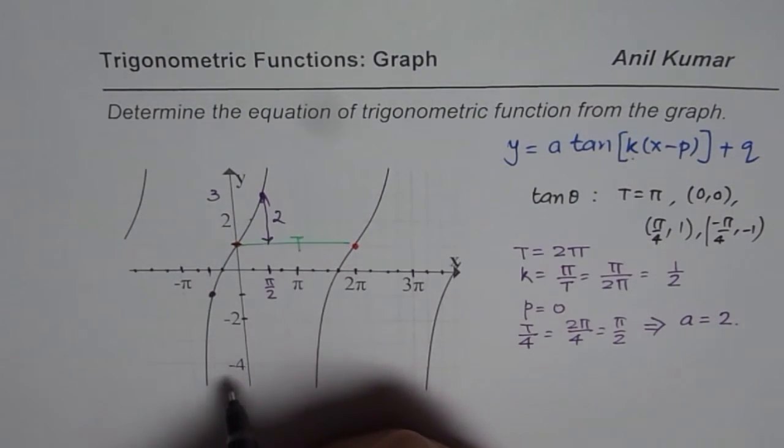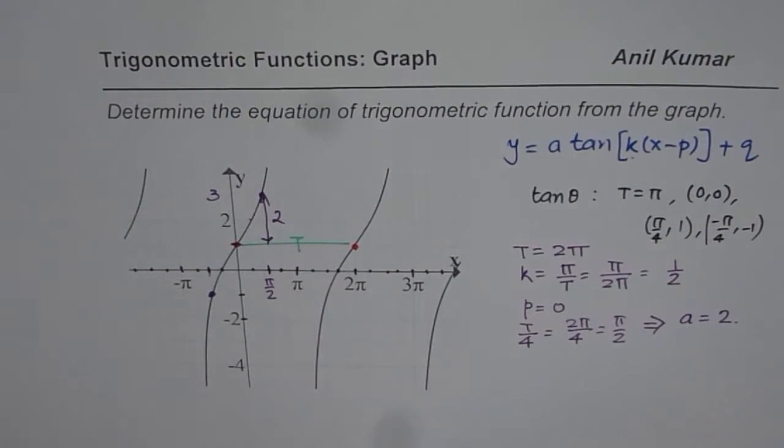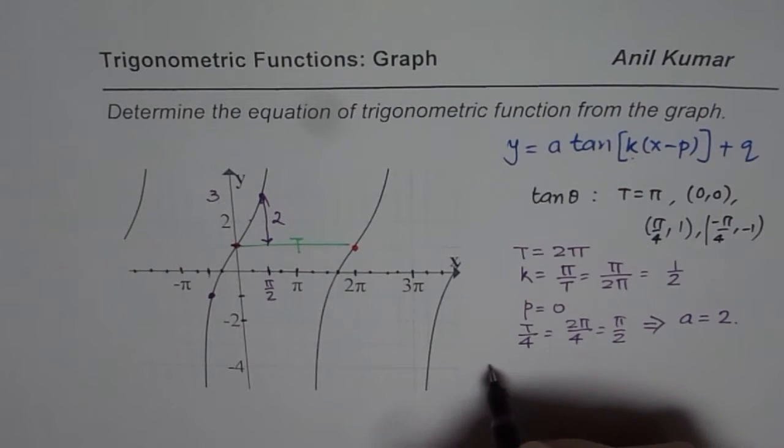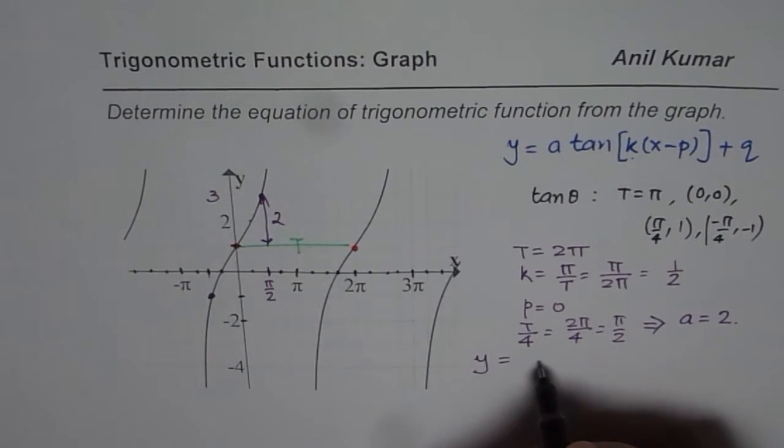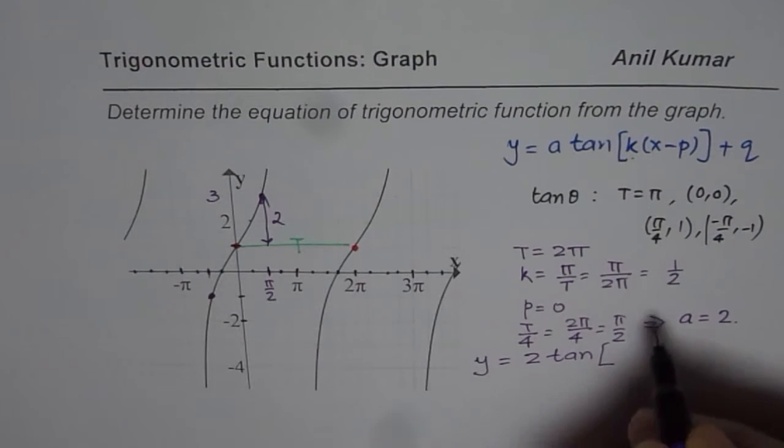So normally, it is going to be 1. Therefore, we can say a is 2 for us. Now, we can write down our function. So the equation for us is y equals to 2 times tan of, k value is half,